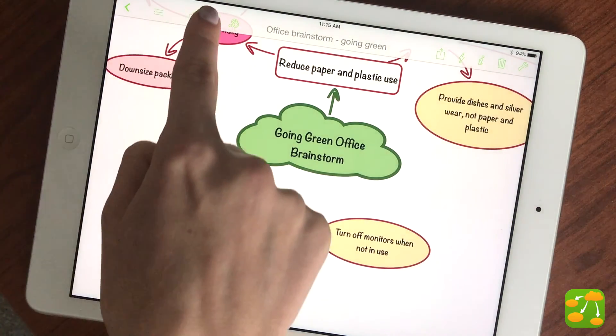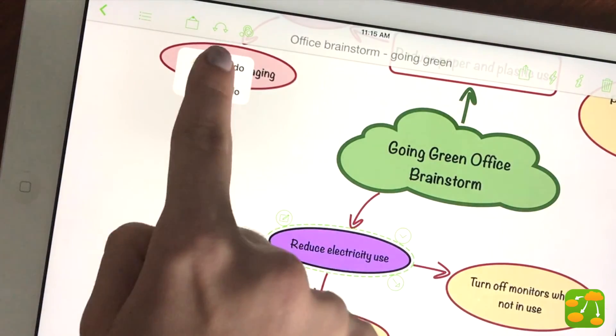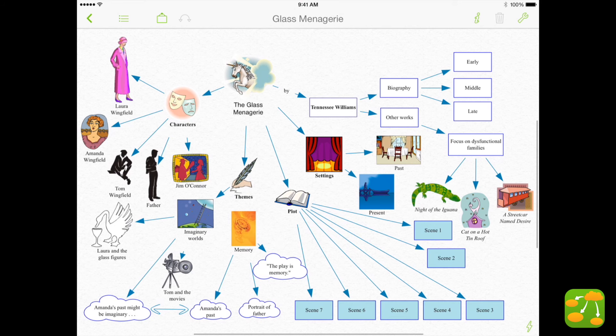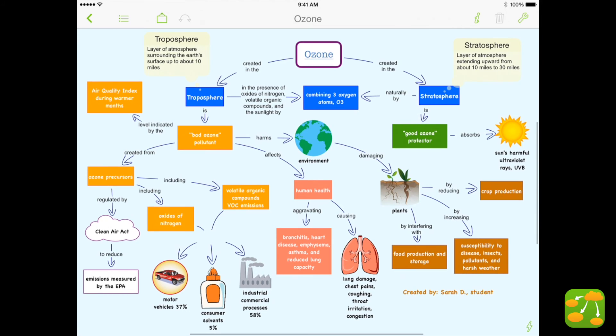If you make a mistake, you can always tap undo, located on your top toolbar. For more detailed information on how to use Inspiration Maps to create beautiful diagrams like these, visit the comprehensive help documentation inside the app.